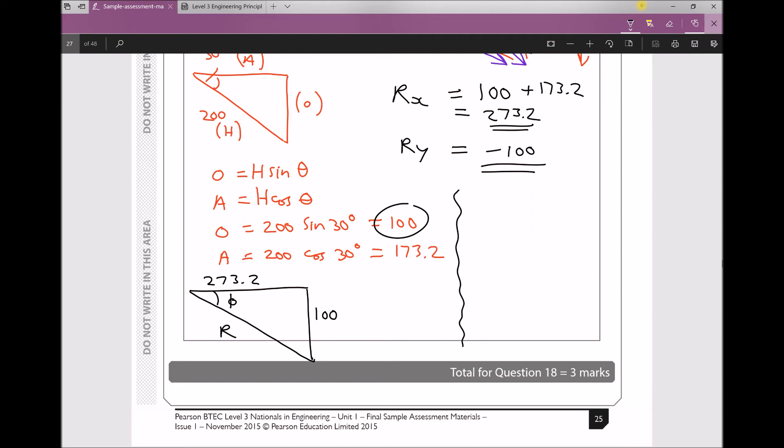The magnitude of R is the square root of the square of the two shorter sides: R = √(273.2² + 100²), giving us a magnitude of 290.9.